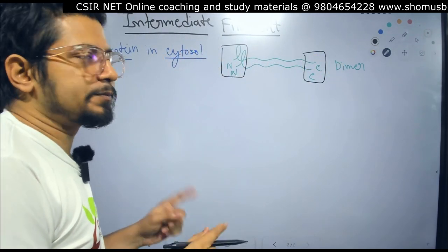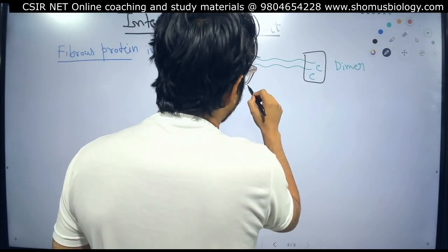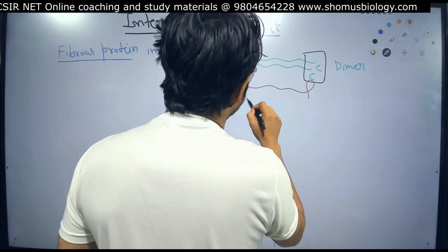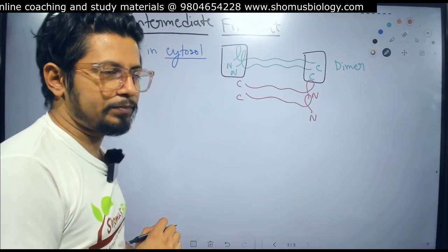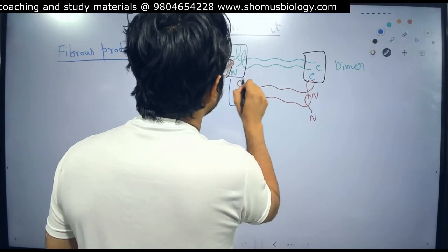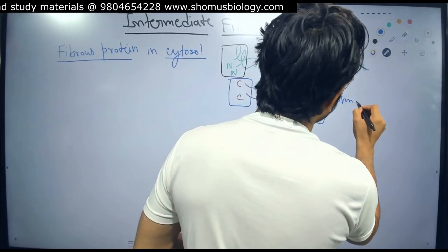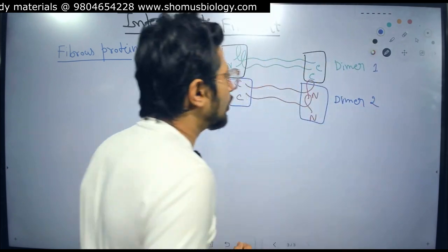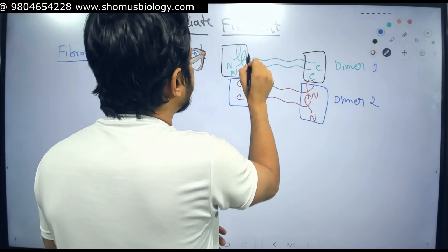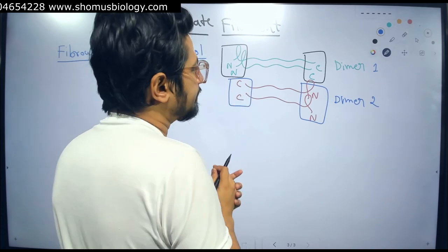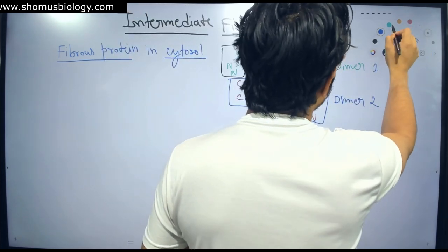Once a dimer is produced, two such dimers come together — but this time they are arranged anti-parallelly. Anti-parallel means the first dimer's N-terminal is on the same side as the second dimer's C-terminal, and the first dimer's C-terminal is on the same side as the second dimer's N-terminal. This anti-parallel dimer arrangement is very important.